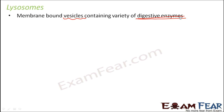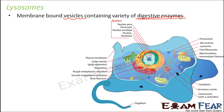Whenever we eat, the food material is digested and then passed on to various parts of the body — end of the day, the food material actually goes to each and every cell of our body, so the cell has to handle that food material. To take care of any appropriate digestive activity, we have these lysosomes.